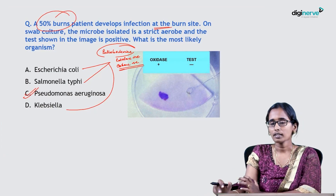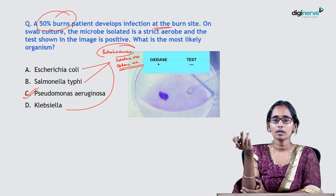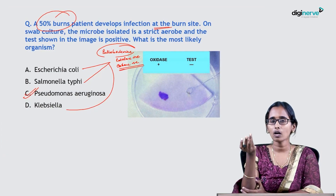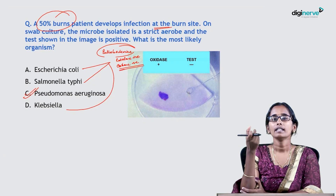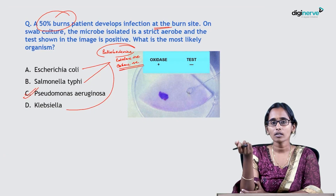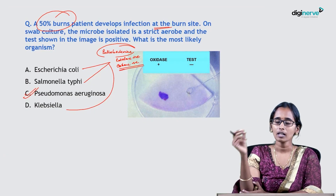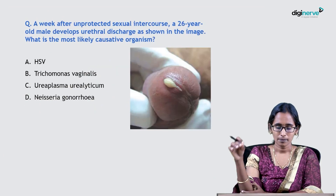Other oxidase positive organisms include Burkholderia, which is oxidase positive; Vibrio cholerae, which is oxidase positive; and Neisseria, which is oxidase positive. All these organisms are oxidase positive.